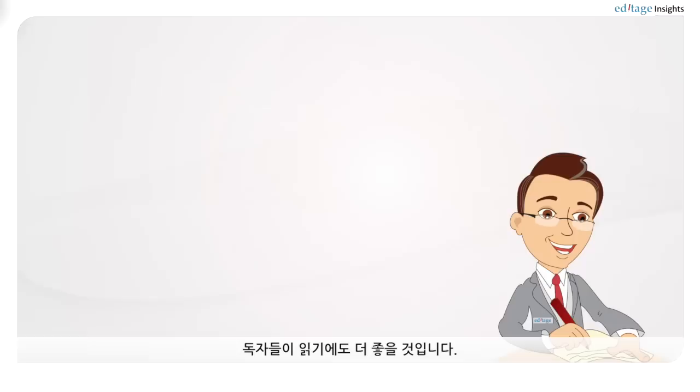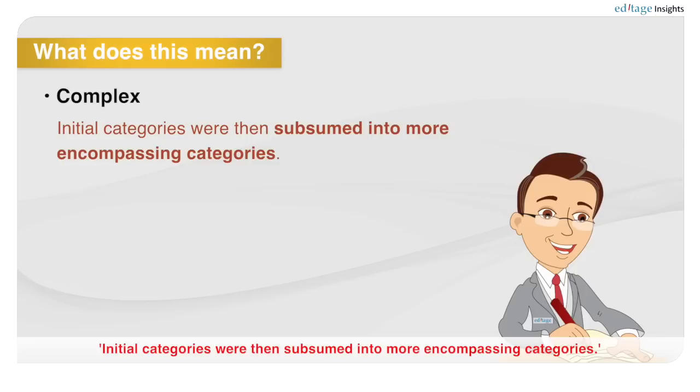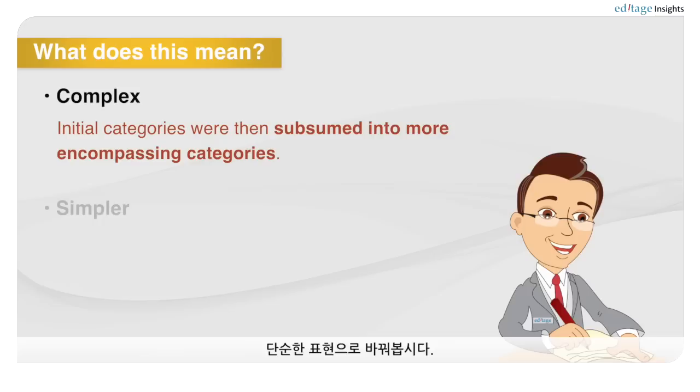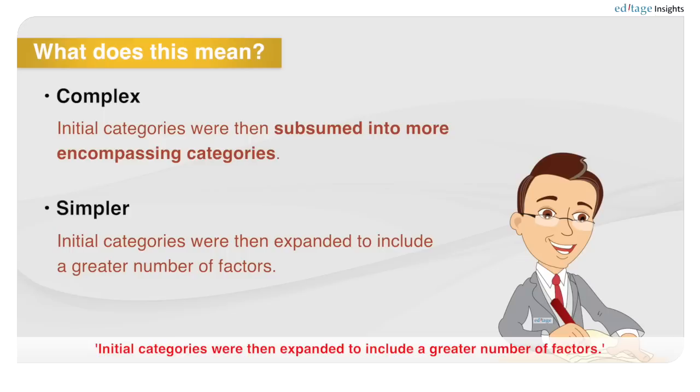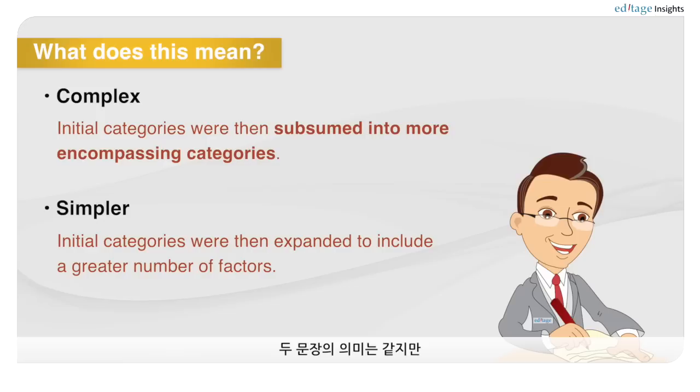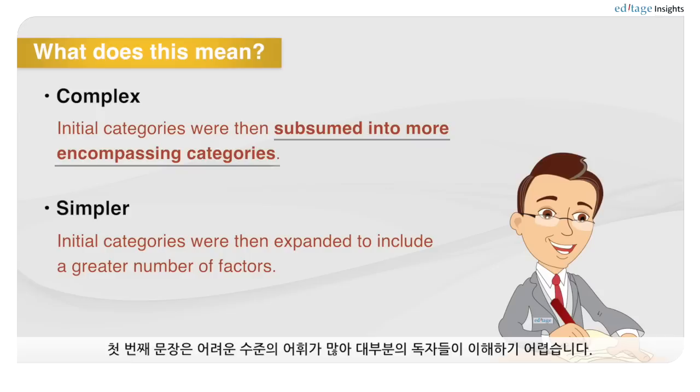In academic writing there's already a large number of very complicated terms, so if you don't need to use a complicated term, use something simple — your reader will appreciate it. Let's take a look at two more examples. 'Initial categories were then subsumed into more encompassing categories' — that's a rather difficult sentence to understand. Why not make it simpler? 'Initial categories were then expanded to include a greater number of factors.' Both have the same meaning, but the first uses a higher level of vocabulary, making it more difficult for the majority of your readers to process.